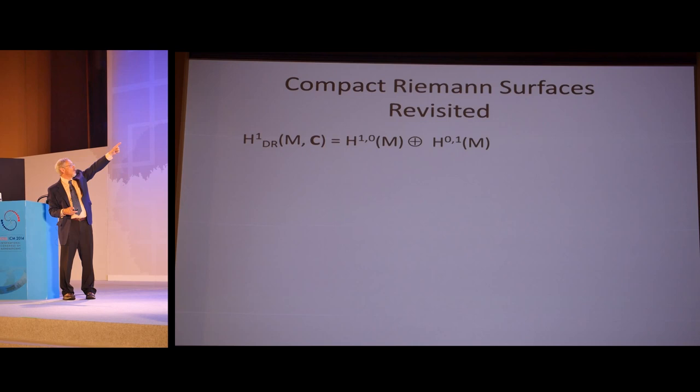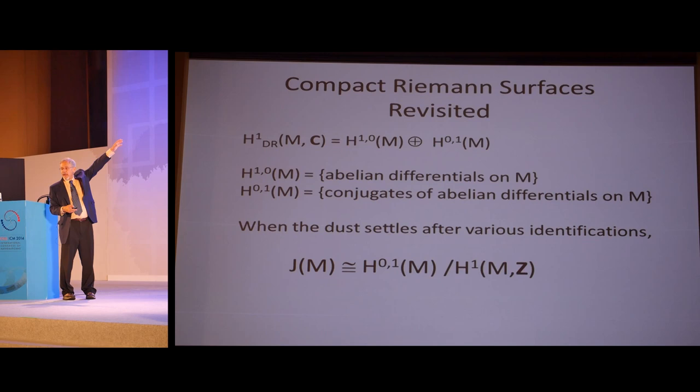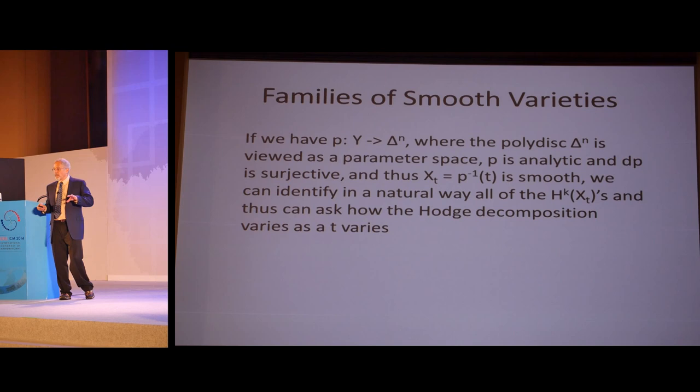He discovered that H¹, H³, H⁵, all the odd dimensional cohomology groups are even dimensional. We'll come back to that. For compact Riemann surfaces, the Hodge decomposition looks like that. The H^(1,0) is the abelian differentials, H^(0,1) is the conjugates. This explains why the analytic genus equals the topological genus. When the dust settles, a nice way of writing the Jacobian, it's H^(1,0)(M) modulo the first cohomology of M with integral coefficients. We'll see why we want that formulation in a little bit. This is where things take a different turn.